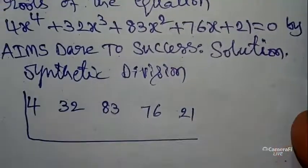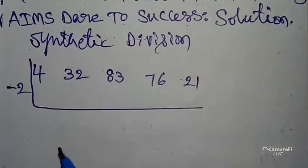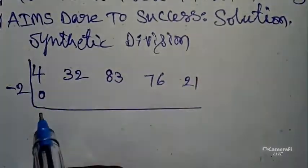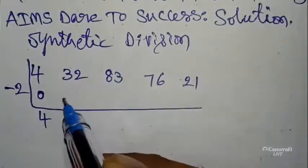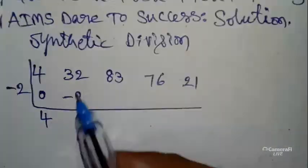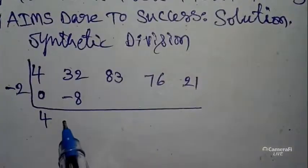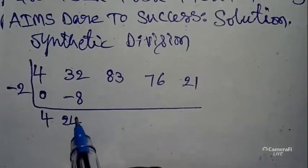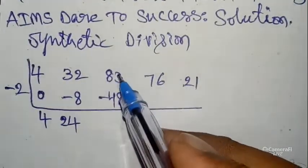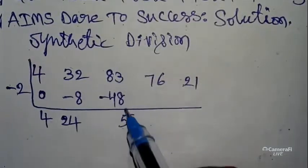According to synthetic division concept, first place 0, addition 4 + 0 = 4. 4 × -2 = -8. 32 - 8 = 24. 24 × -2 = -48.